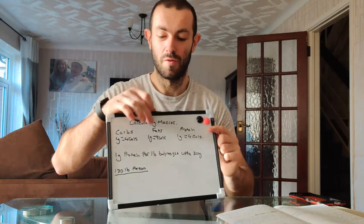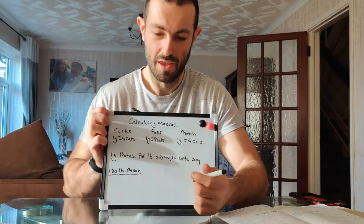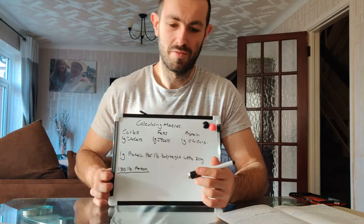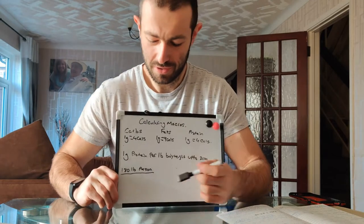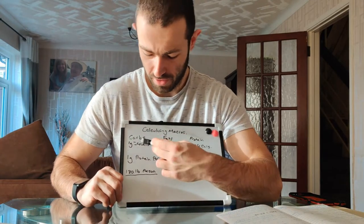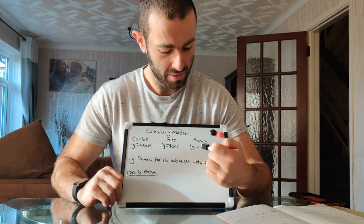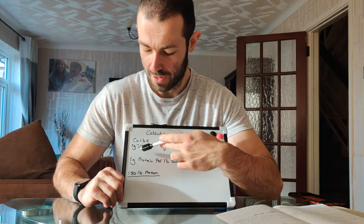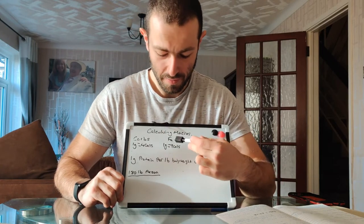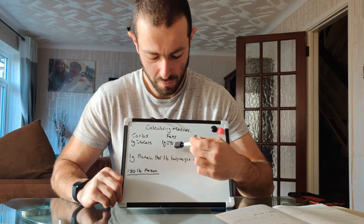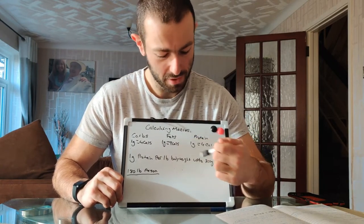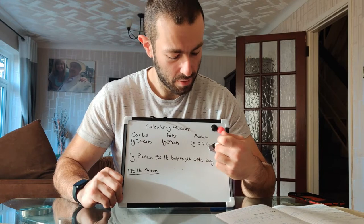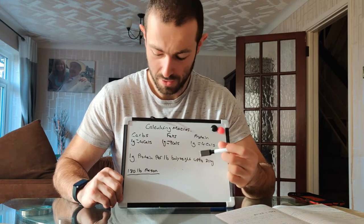If you don't know what macros are to start with: your calories are broken down into macronutrients. You've got carbs, fat, and protein. Carbs are worth 4 calories per gram. Fats are worth 9 calories per gram. And protein, again, 4 calories per gram.